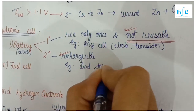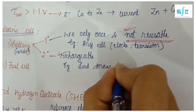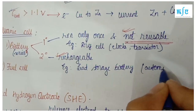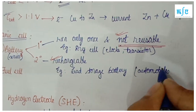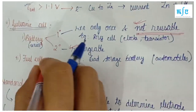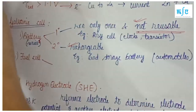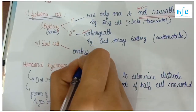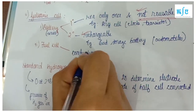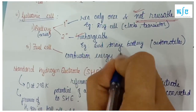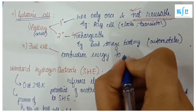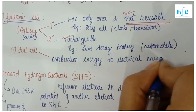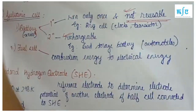The battery is used in solar systems and also used for electric energy, converting energy to electrical energy.